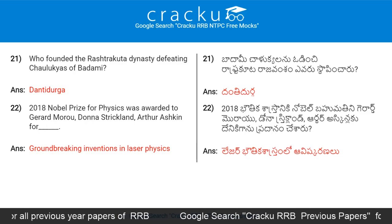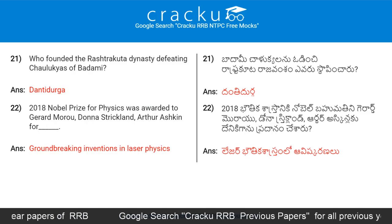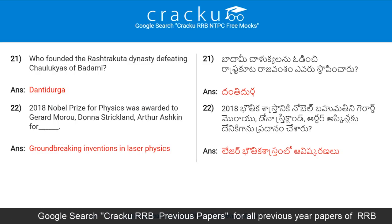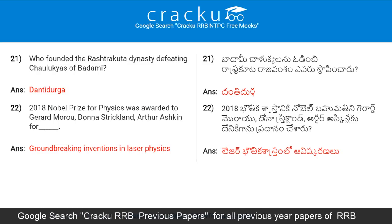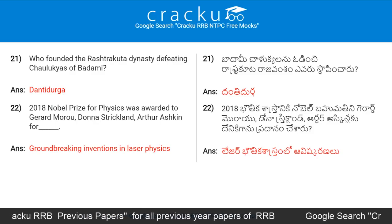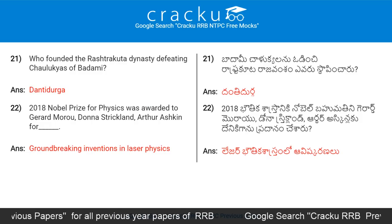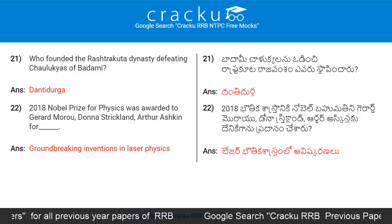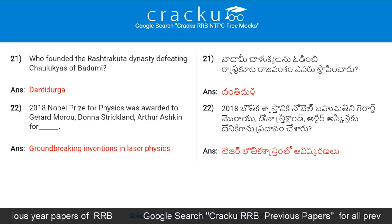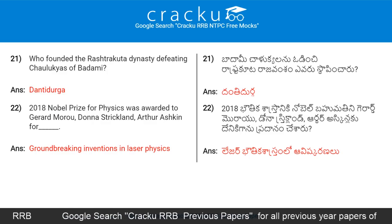Who founded the Rashtrakuta dynasty by defeating the Chalukyas of Badami? Dantidurga. The 2018 Nobel Prize for Physics was awarded to Gerard Mourou, Donna Strickland, and Arthur Ashkin for groundbreaking inventions in laser physics.